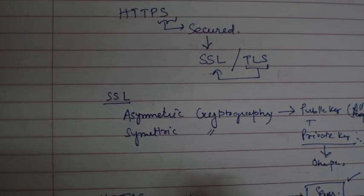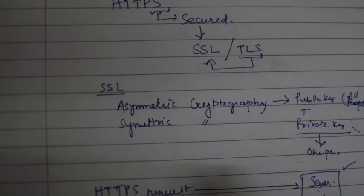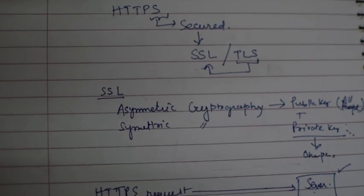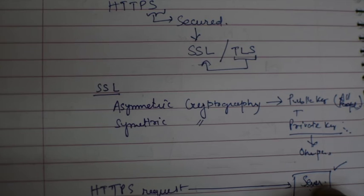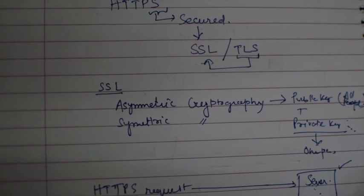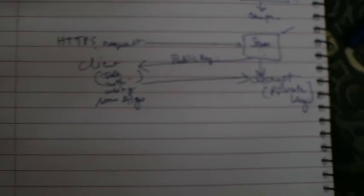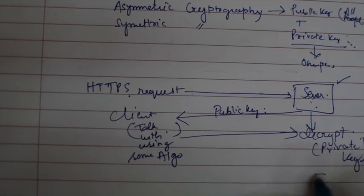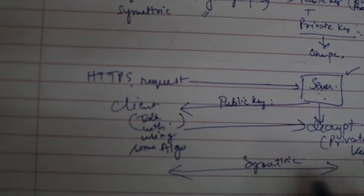Using that public key, your client communicates the encryption algorithm it wants to use and sends it to the server. The server then decrypts this using its private key. Once both sides know the algorithm, they establish a symmetric connection between them, and the SSL handshake is complete.